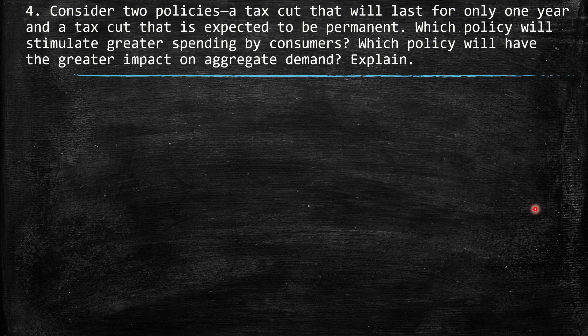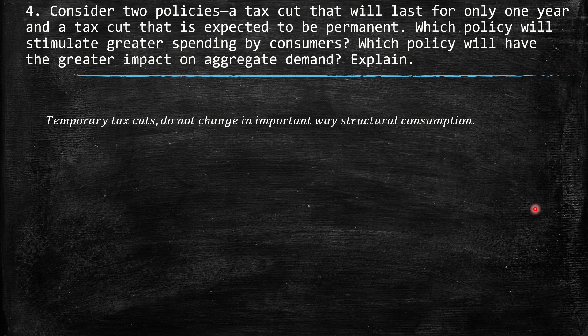Question 4: Consider two policies — a tax cut that will last for only one year, and a tax cut expected to be permanent. Which will stimulate greater consumer spending? When people face temporary tax cuts, they are aware the change won't last, so their behavior is basically the same and the impact on aggregate demand is not significant. But a permanent tax cut really shifts aggregate demand — there is a truly important impact.